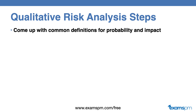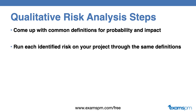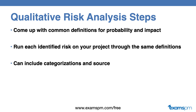Here are the steps to compute qualitative risk analysis. First, we come up with common definitions for probability and impact. Then we run each of the identified risks on our project through the same definitions. We can also include other factors, sources, or categorizations — this particular risk may belong to a specific categorization defined in our project. The qualitative risk analysis will also include the appropriate categorization of the risk, where it's sourced, and the effect.